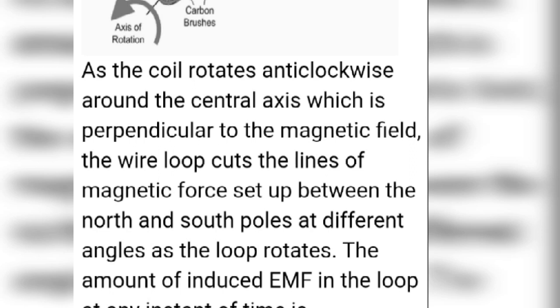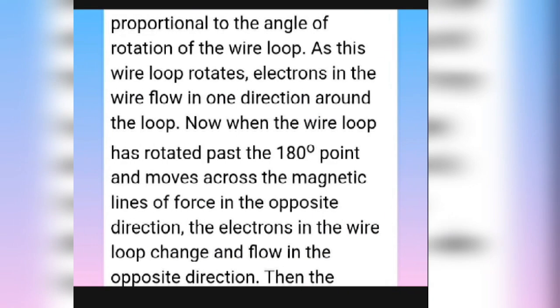As the coil rotates anti-clockwise around the central axis, which is perpendicular to the magnetic field, the wire loop cuts the lines of magnetic force set up between the north and south pole at different angles. As the loop rotates, the amount of induced EMF in the loop at any point in time is proportional to the angle of rotation of the wire loop.